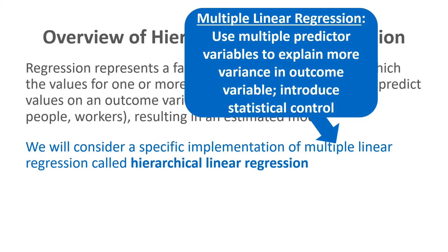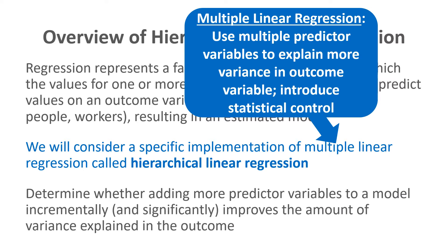Multiple linear regression uses multiple predictor variables to explain more variance in an outcome variable. Because of this, it introduces what we call statistical control — you can look at each predictor variable while holding the other predictor variables in the model constant. This becomes important when we consider the application of multiple linear regression in hierarchical regression models, where we're trying to determine whether adding more predictor variables incrementally and significantly improves the amount of variance explained in the outcome. We can add one variable at a time, or blocks of multiple variables, to see whether there is a significant increase in variance explained.